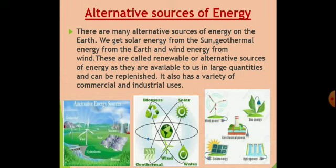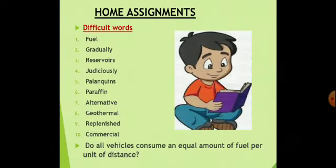I think children, you all have understood this chapter. If you have any problem, go through the video and write your query there. You can also ask your question in the WhatsApp group. Now it is time for some homework. Here are some difficult words — you have to write them in your rough copy: fuel, gradually, reservoirs, judiciously, palanquins, paraffin, alternative, geothermal, replenished, commercial. Question: Do all vehicles consume an equal amount of fuel per unit of distance? Thank you to all children.